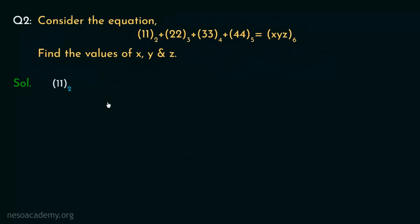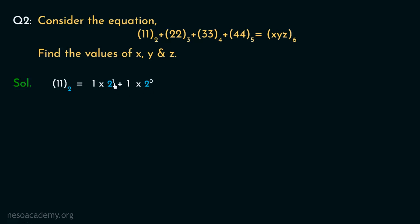Let's begin with binary 11. Being a 2-bit binary number, the place values are 2 raised to the power 1 and 2 raised to the power 0. So 1 times 2 is 2, and 1 times 1 is 1. Therefore, 11 in binary is 3 in decimal.